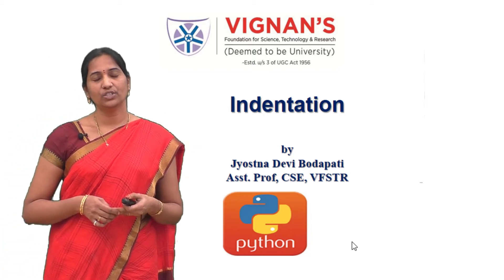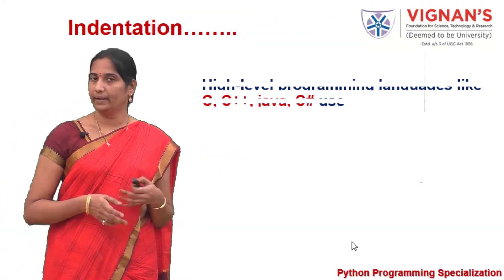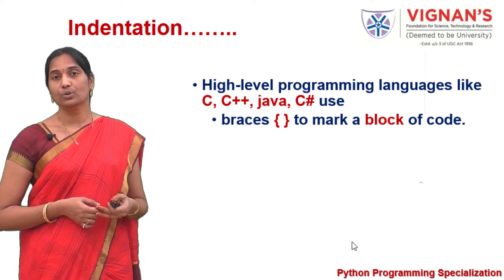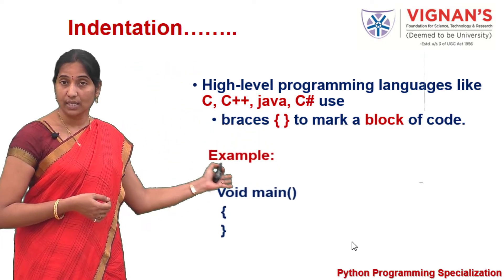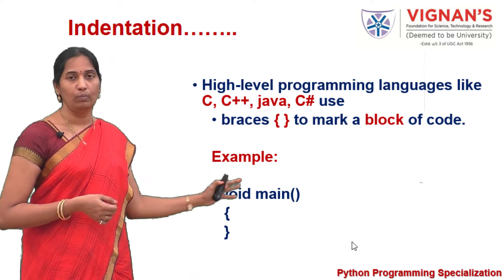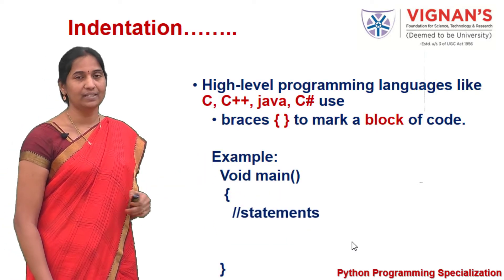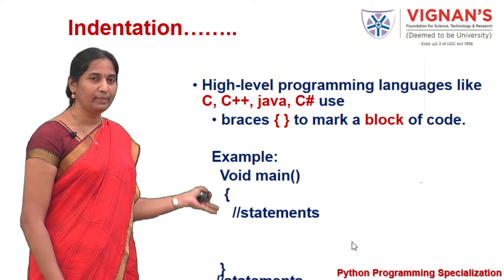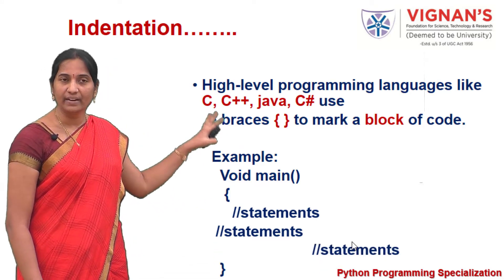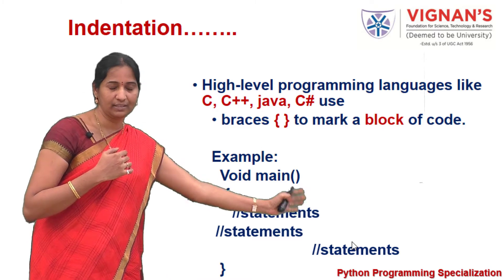Let's see how we can use indentation in Python. In other conventional programming languages like C, C++, Java, and C#, if you want to indicate a block of code, we usually use curly braces. Consider this example of a C code where we have a main function with curly braces to indicate a block of statements. You can observe that the statements are written in a zigzag manner across different columns.